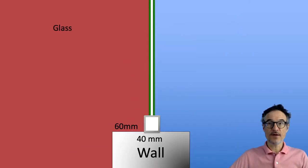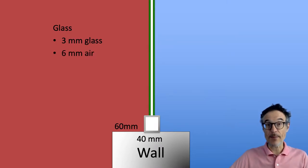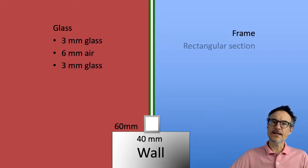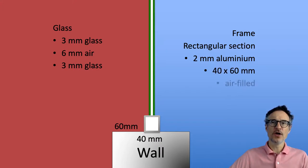So we have the glass: three millimeters of glass, then six millimeters of air gap in the middle, then another three millimeters of glass. We've got a frame, and I think the frame is a rectangular section of two millimeter thick aluminum in a rectangle with air in the middle.